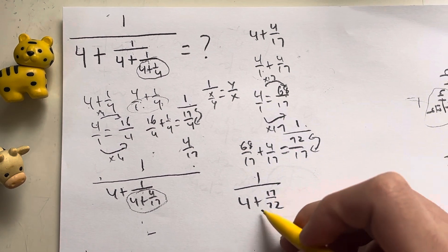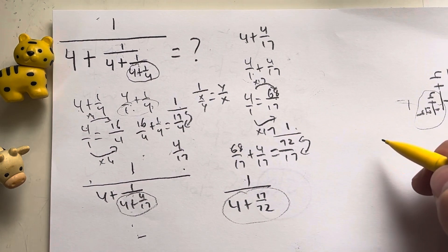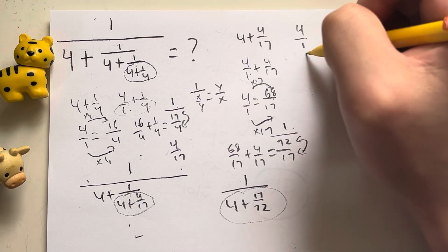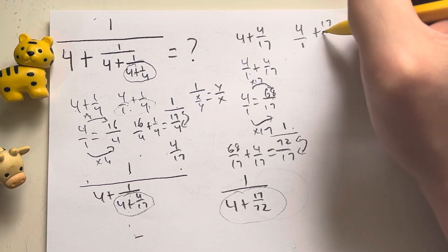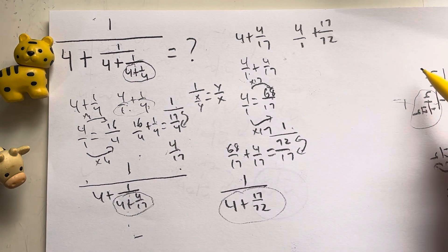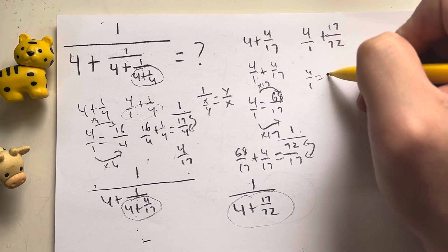That's going to be my final expression, because what's 4 plus 17 over 72? What I'm going to do is rewrite 4 over 1 plus 17 over 72. I need a common denominator again. In this case, it's going to be 72.